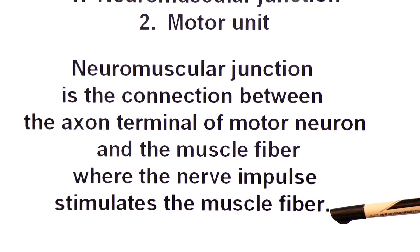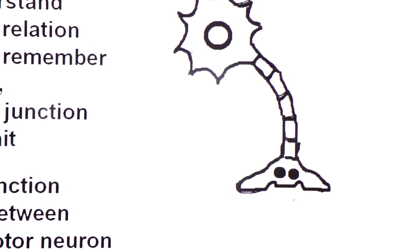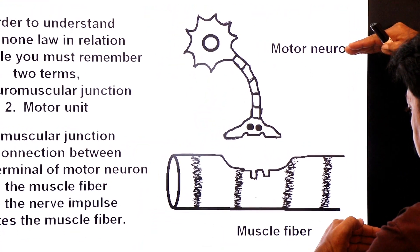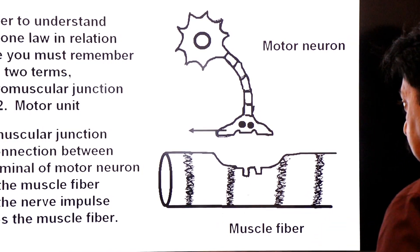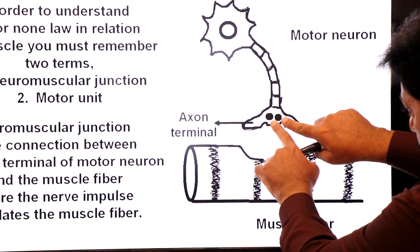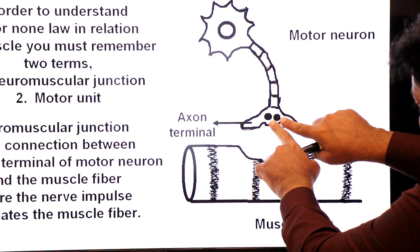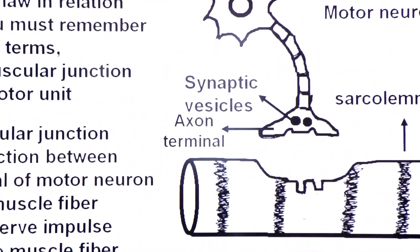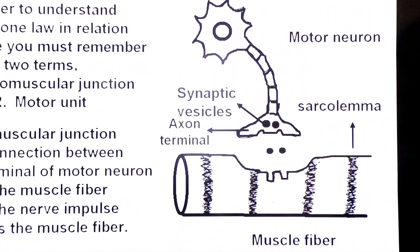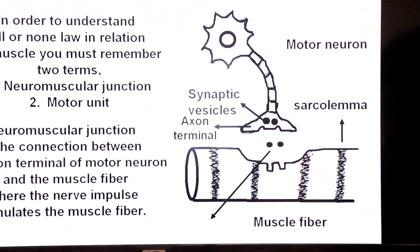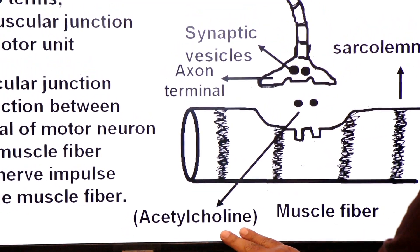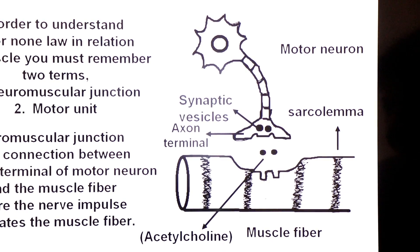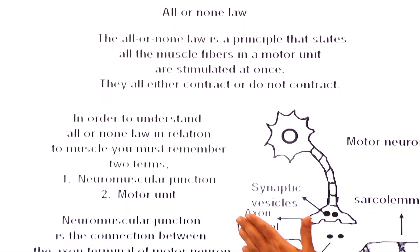Look at this diagram showing a motor neuron and a muscle fiber. Where the motor neuron makes chemical contact with muscle fibers, that point of contact is the neuromuscular junction. This is the axon terminal, and in the axon terminal there are knob-like synaptic vesicles. These synaptic vesicles release chemicals into a gap called the synaptic gap. These chemicals are called neurotransmitters, and one neurotransmitter that stimulates contraction of muscle fiber is called acetylcholine.